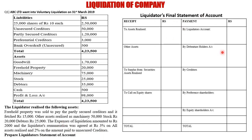The format prepared is the Liquidator's Final Statement of Account. On the receipt side we have: assets realized, other assets, and surplus call on equity. On the payment side we have: liquidator's account, debenture holder's account, creditors account, preference shareholders account, and equity shareholders account. We begin with assets realized, specifically cash and bank.